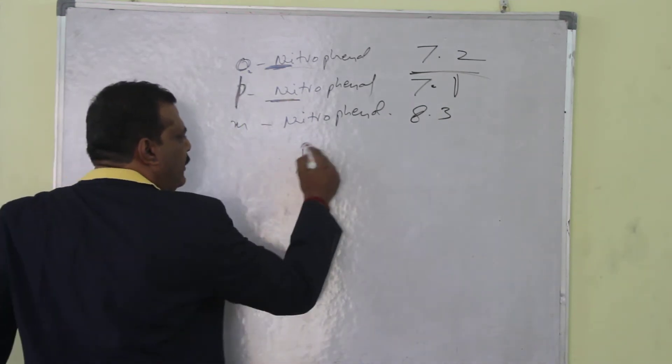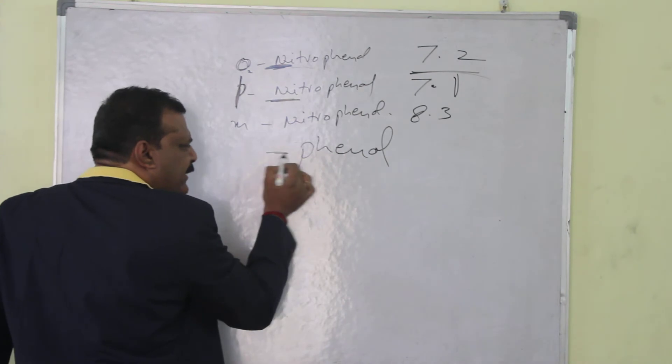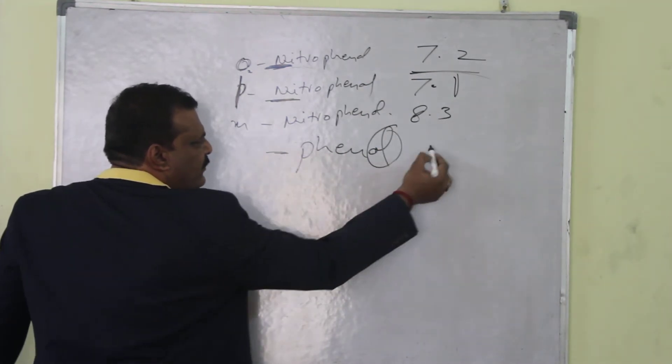Now in case of phenol, only without nitrogen, the phenol value is 10.